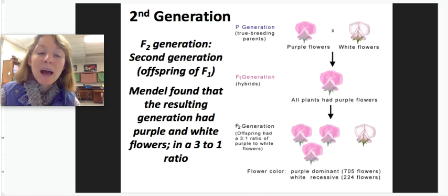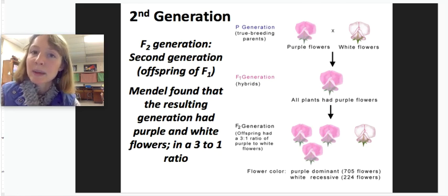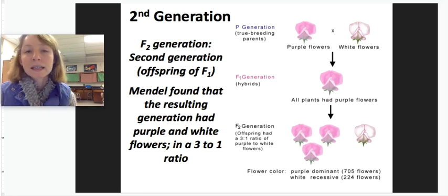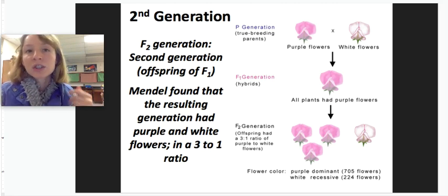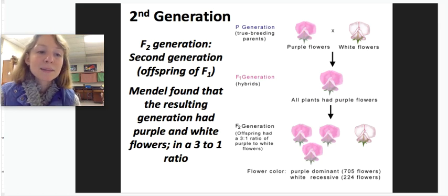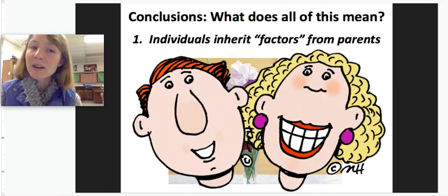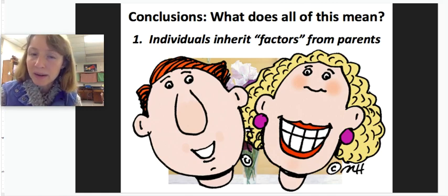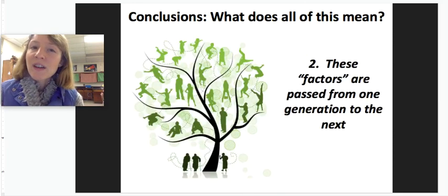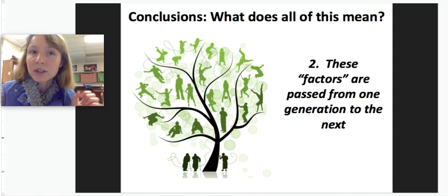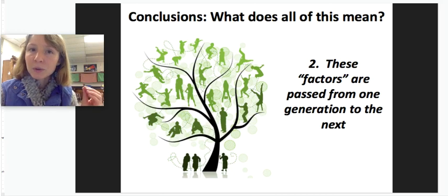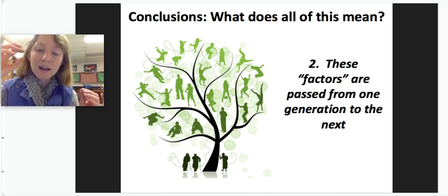This pattern appeared across multiple different traits in the pea plants — in height, in seed color, in seed texture, and many others. His first takeaway was that individuals must inherit factors from parents — a factor that influences the color of the flower, for example. These factors are passed from one generation to the next, because even though the F1 generation was all purple, the F2 must have carried that white color factor, since some flowers ended up white.